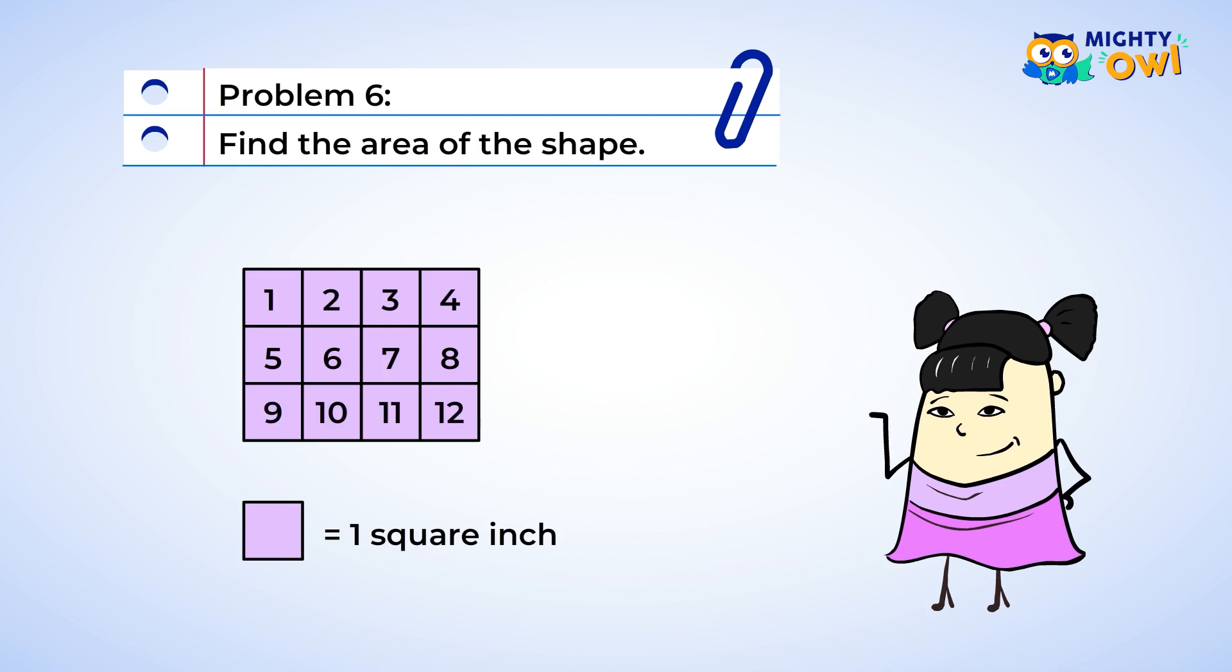Next, we have four squares in the last row. So this shape has 12 squares.